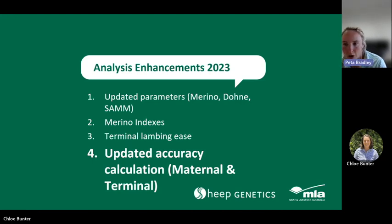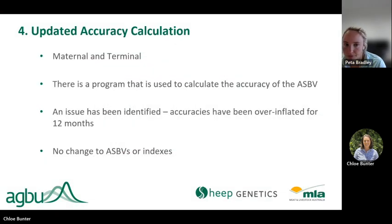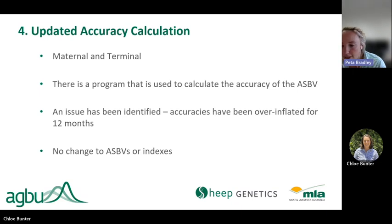This is the final video on this year's analysis enhancement webinars. This section looks at the updated accuracy calculation that impacts the maternal and terminal analyses. This updated accuracy calculation is a result of a program that we use in the analysis to calculate the accuracy of the breeding value, and is applicable to the maternal and terminal analyses, as for both of these we have a multi-breed genetic evaluation that we need to consider when looking at genomic information.